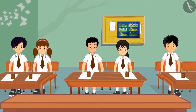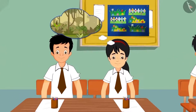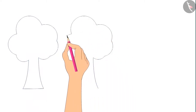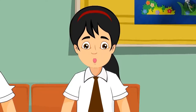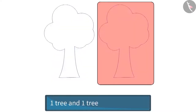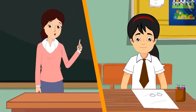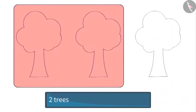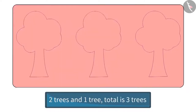Pinky thought of making a drawing of a jungle. At first she drew one tree, and because she had to make a dense forest she drew another tree. Pinky, what have you drawn? At first I drew one tree, then I drew another tree, so in total I drew two trees.